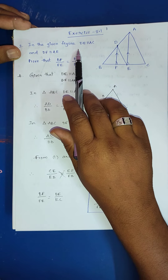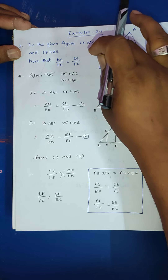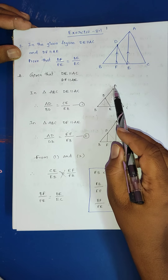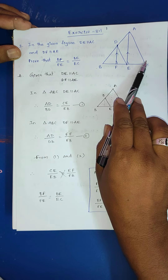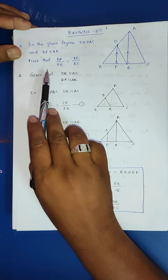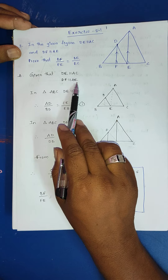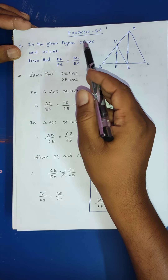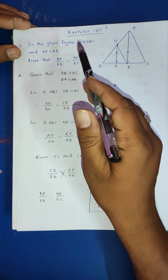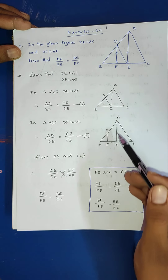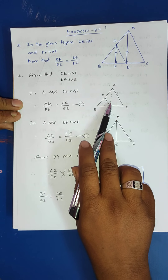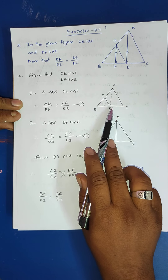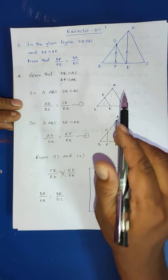What is given and what is needed to find — that is important. Given: DE is parallel to AC. This DE line and this AC line. Using the given conditions, I draw two separate figures. In triangle ABC, DE is parallel to AC. Then, using the basic proportionality theorem: AD by BD is equal to CE by EB.